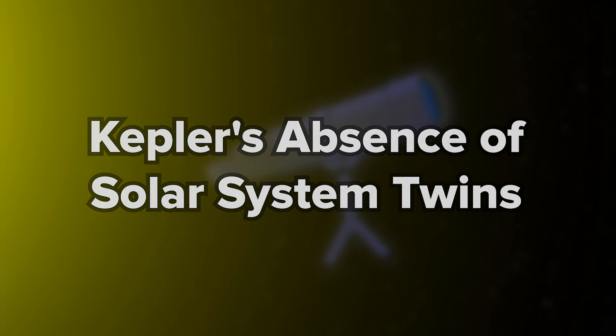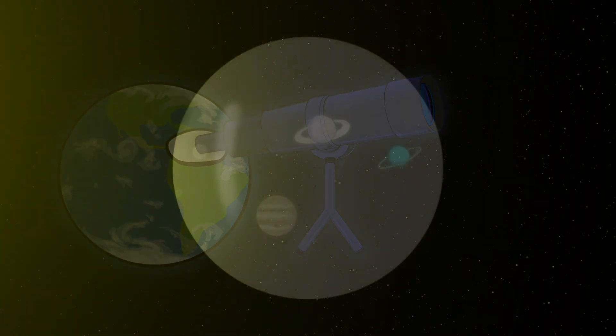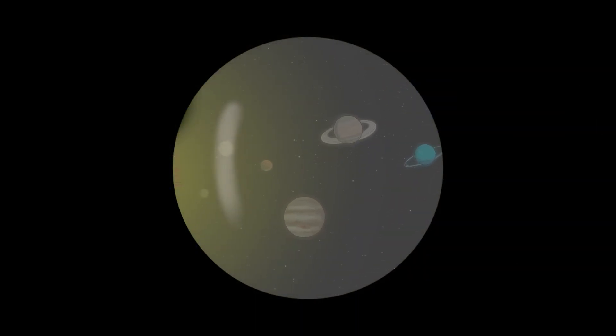The Kepler telescope found many exoplanets, but none were exactly like our solar system with multiple rocky planets in circular orbits. This makes our solar system unique in its configuration.